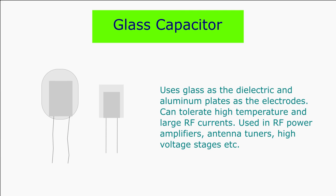Glass capacitors use glass as the dielectric. The capacitor plates are made up of aluminum plates with glass placed in between, which is then encapsulated inside an enclosure. The advantages of glass capacitors are that they are noise-free, can handle high temperatures, and large RF currents. Glass capacitors are used in circuits where there are high temperatures, need for high Q, and high power handling.